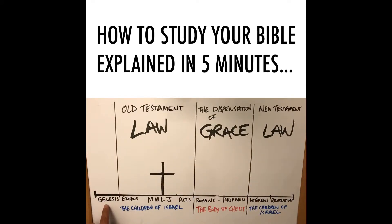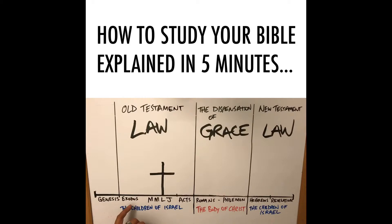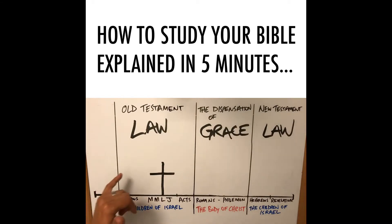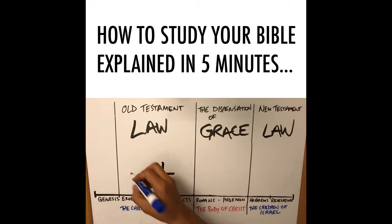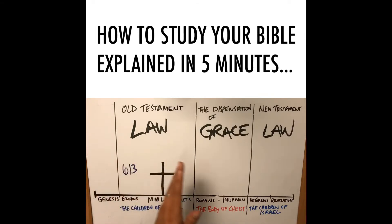We have our first book of the Bible, Genesis, and our last book of the Bible, Revelation, with all the books in between. Exodus is when Israel basically becomes a nation. Moses was given the law — about 613 laws and commandments — and the children of Israel had to keep this law. Do it, they'd be blessed; don't do it, they'd be cursed.